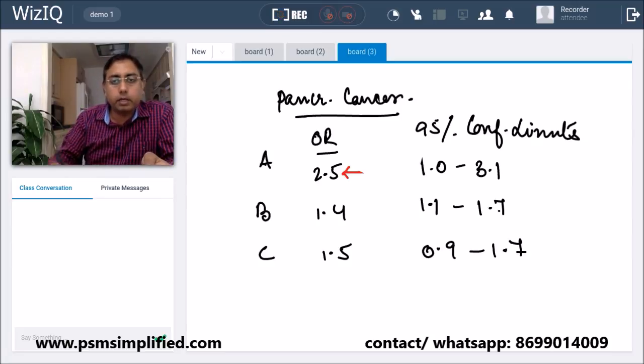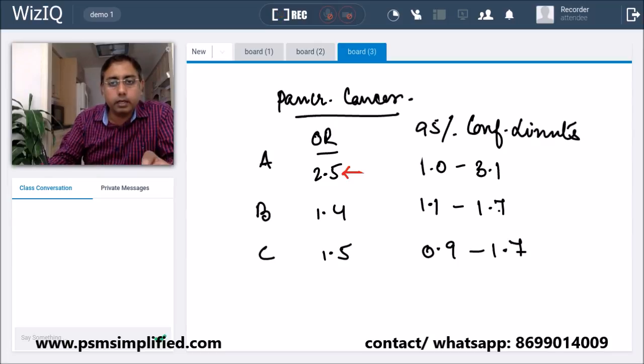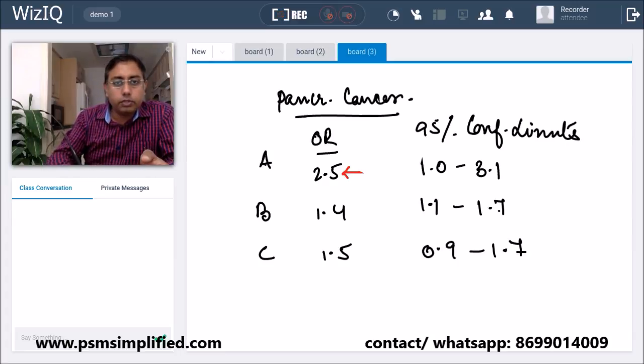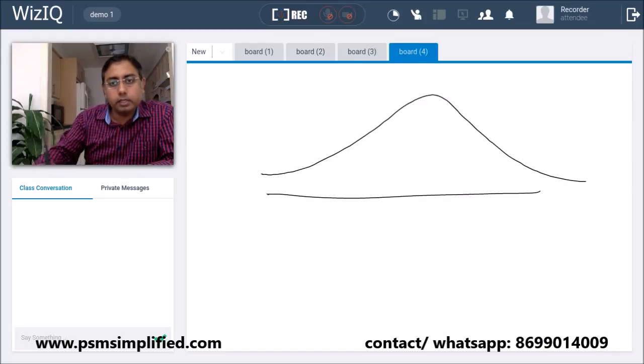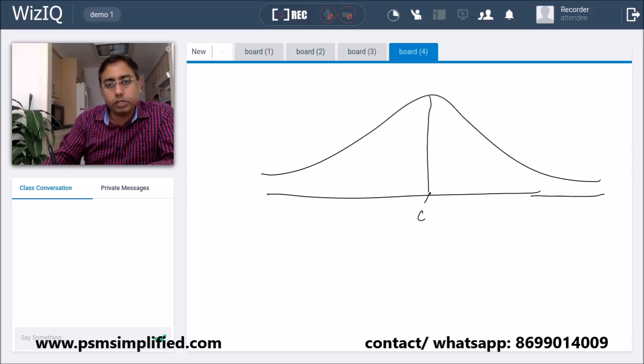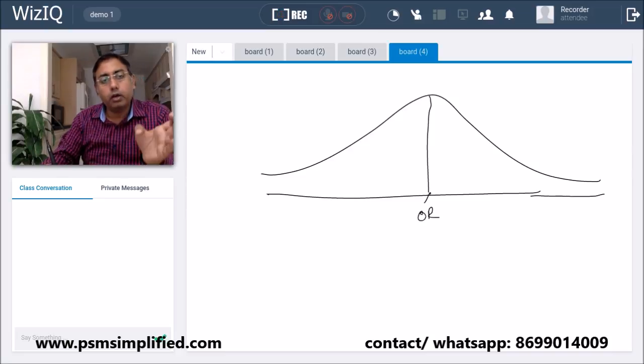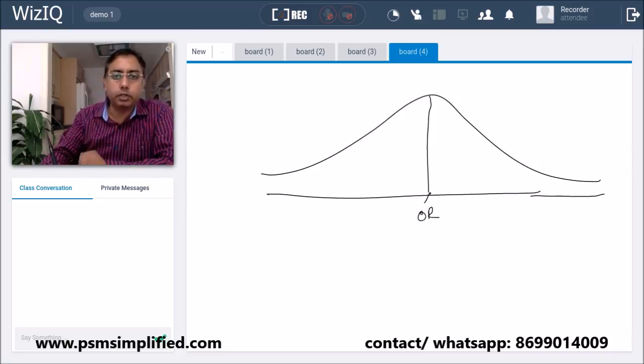However, if you look closely at the 95% confidence interval, let me show you something. In biostatistics, there's something known as a normal distribution curve. At the center point is the mean or central odds ratio. I've plotted the odds ratio on a normal distribution curve.